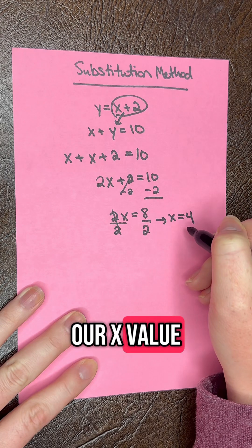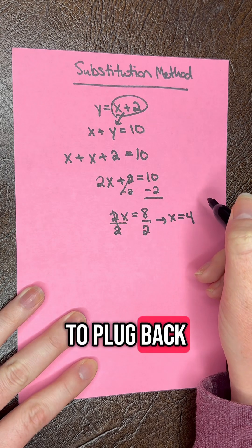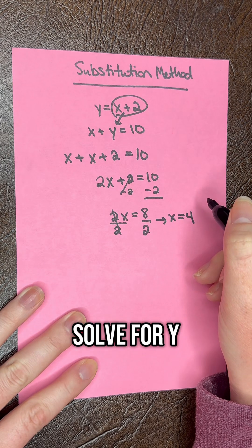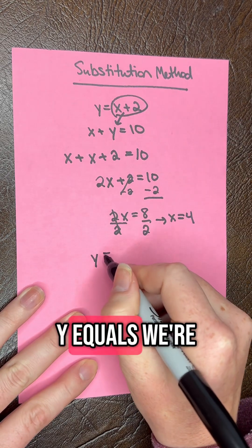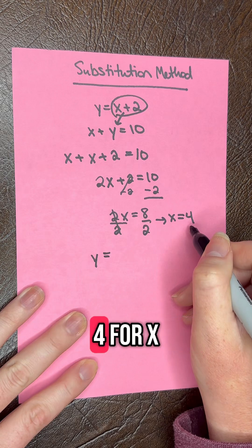So this is our x value. Now we need to plug back into one of the equations to solve for y. So let's use equation 1 here. So we have y equals, we're now plugging in 4 for x.